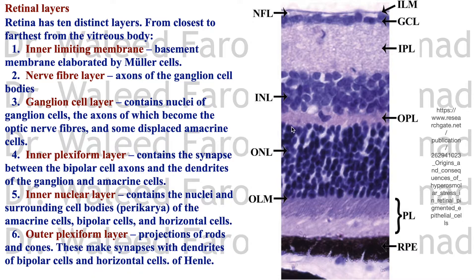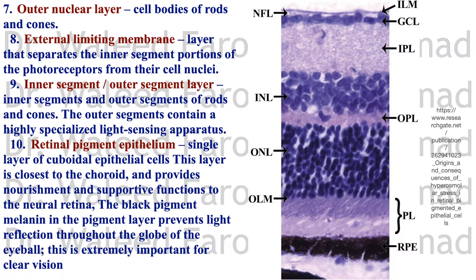The outer plexiform layer contains projections from the rods and cones that make synapses with dendrites of bipolar cells and horizontal cells. The outer nuclear layer contains the cell bodies of the rods and cones. They have inner segments and outer segments. The external limiting membrane separates the inner segment portion of the photoreceptors from the cell nuclei.